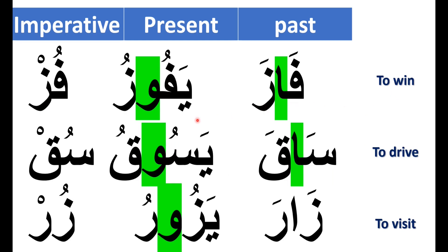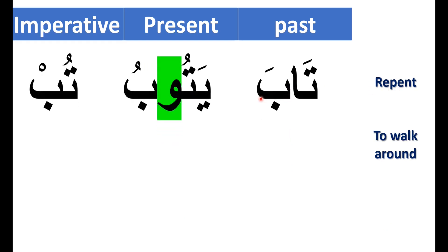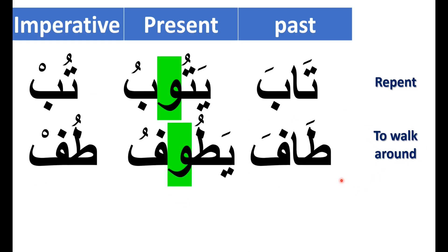To win: فاز, he won; يفوز, he wins; فز, win. To drive: ساق, he drove; يسوق, he drives; سق, drive. To visit: زار, he visited; يزور, he visits; زر, visit. To repent: تاب, he repented; يتوب, he repents; تب, repent. To walk around: طاف, he walked around; يطوف, he walks around; طف, walk around.